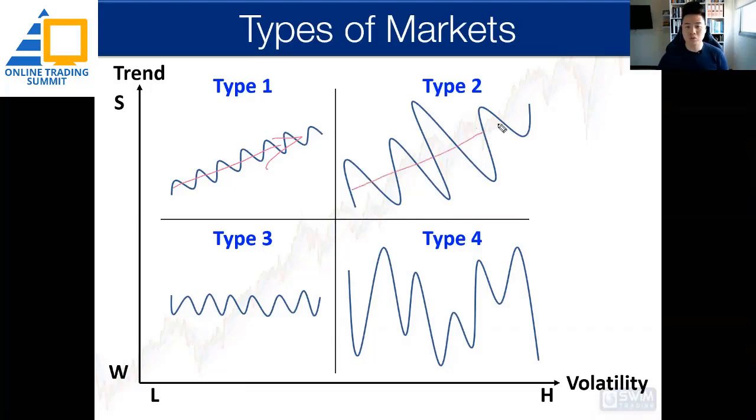Then you have type two, which is still trending. This trend can be uptrend or downtrend. Type two market has very high volatility. That means your swing points are very wild with very deep pullback, instead of the shallow pullback we see in type one.